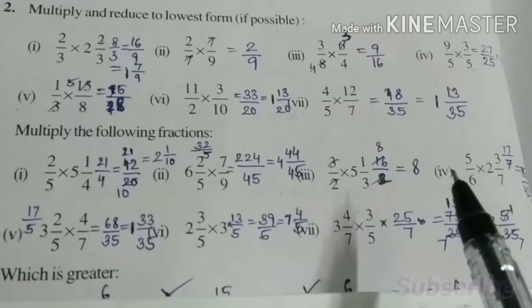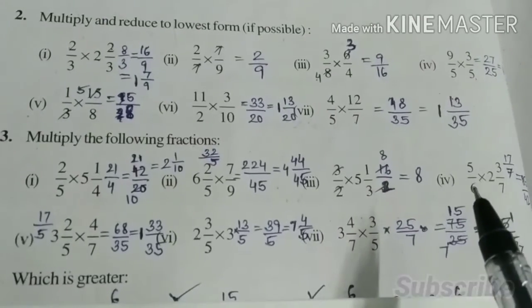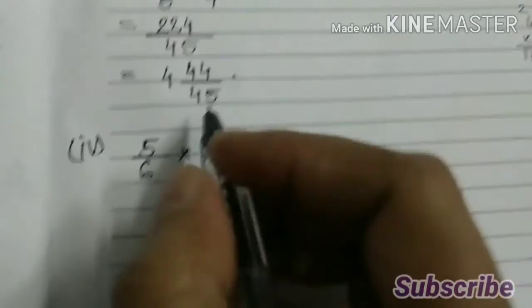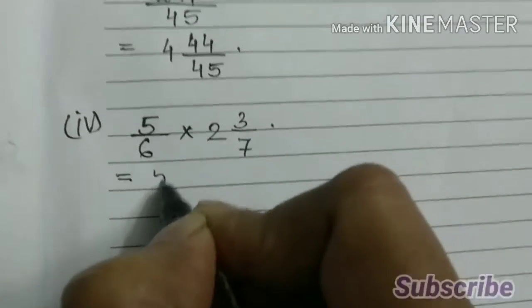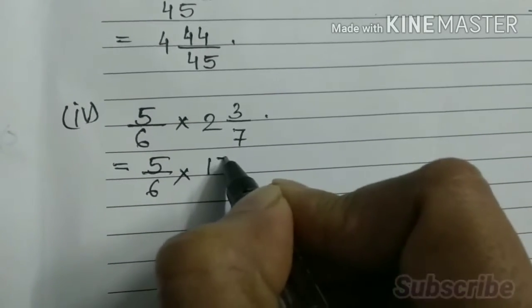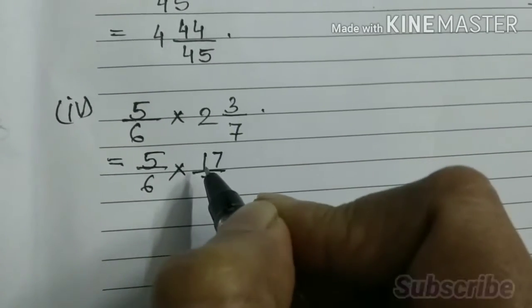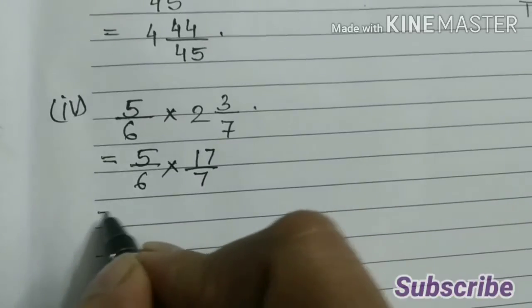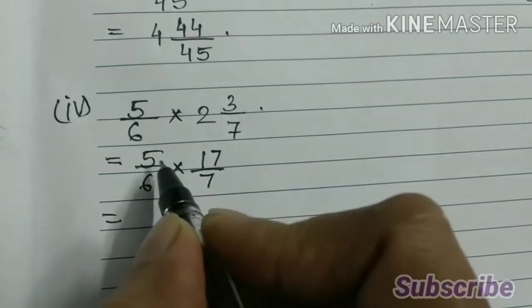Now fourth: 5 by 6 into 2 3 by 7. Here I have written the question. Again 5 by 6 into, 14 plus 3, 17 by 7. So 5 into 17.